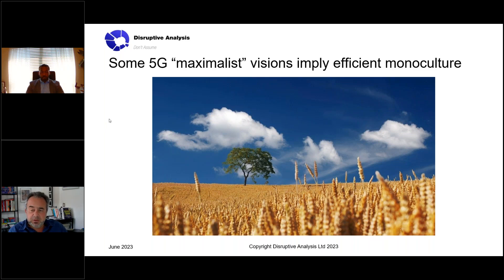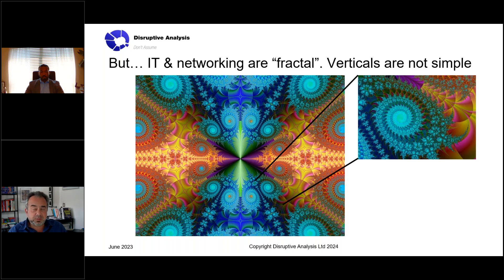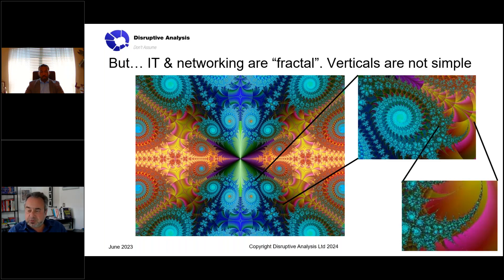When we talk about enterprise IT and networking, essentially everything is like a fractal — the closer you look, the more detail you get. Whether it's an industry, a specific company, or even a specific business process, there is more and more detail when you double-click. One application has multiple workloads, multiple endpoints, multiple users, and there's a time dimension to all of this, which mitigates against these nice, easy monoculture visions.